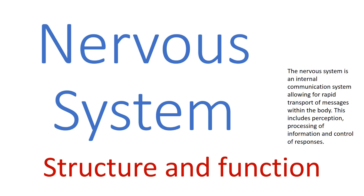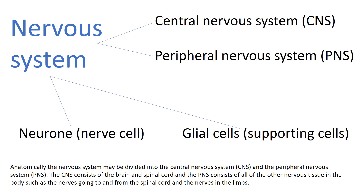This is what makes the nervous system such an interesting topic for study. The whole nervous system can be anatomically divided into the central nervous system, the CNS, and the peripheral nervous system, the PNS. The central nervous system is the brain and the spinal cord. The peripheral nervous system is any other nervous tissue found in the body not part of the brain or spinal cord — for example, the cranial nerves coming from the brain, or the nerve roots leaving the spinal cord going into the limbs.